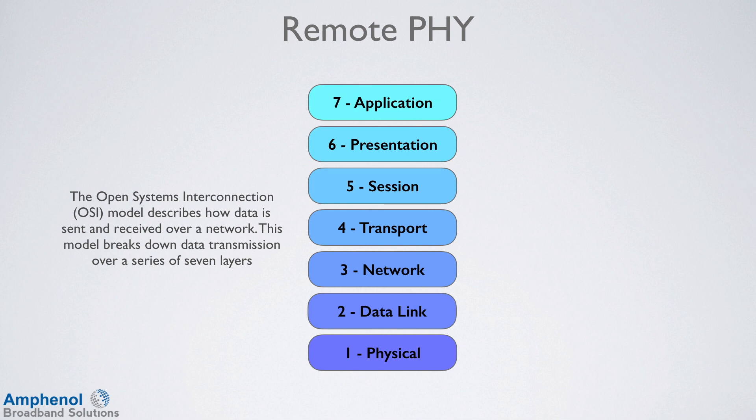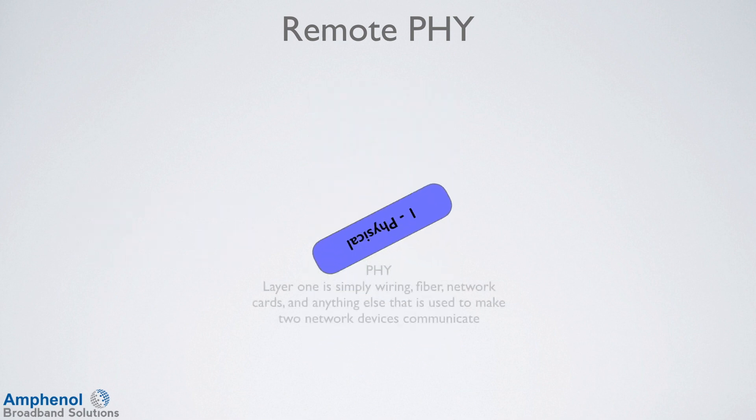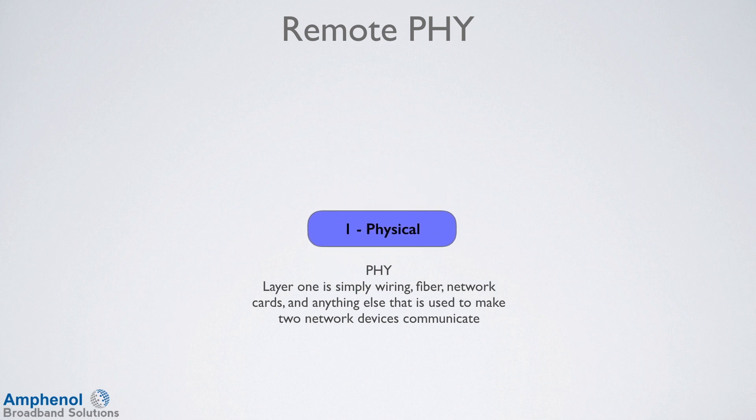The Open Systems Interconnection model describes how data is sent and received over a network. This model breaks down data transmission over a series of seven layers. With Remote PHY, we'll be dealing with the first layer, which is the physical layer, or PHY. The physical layer includes simple wiring, fiber, network cards, and anything else that is used to connect two network devices and allows them to communicate.